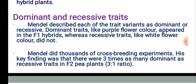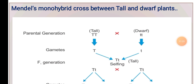Mendel did thousands of crossbreeding experiments. His key finding was that there were three times as many dominant as recessive traits in F2 pea plants. We can understand this by using a cross — it is called a monohybrid cross between tall and dwarf plants. Pea plants are normally self-pollinating, but Mendel performed cross-pollination — or hybrid irradiation experiments, also called artificial hybridization experiments.